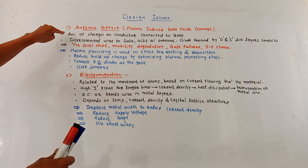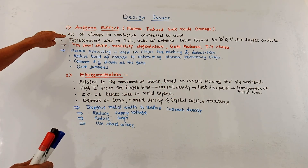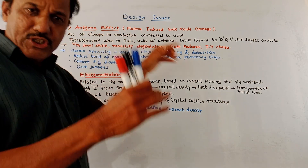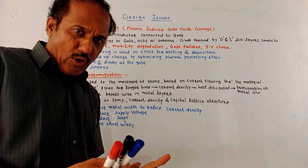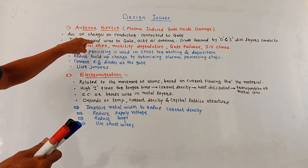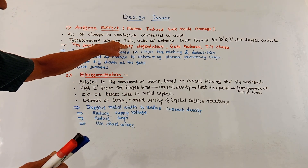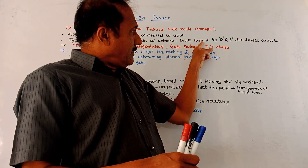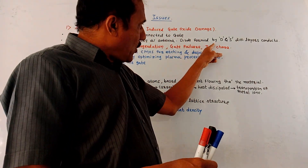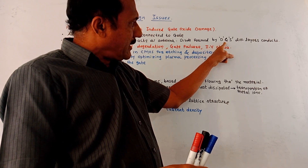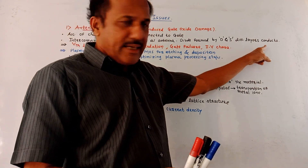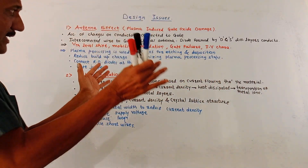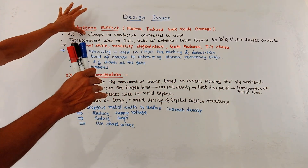Another name for this antenna effect is plasma induced gate oxide damage, because this effect is related to the plasma which is getting induced. There is accumulation of charges on the conductor connected to the gate terminal of the MOSFET, so the interconnected wire to the gate terminal acts as an antenna. There is also a diode formed between drain and source diffusion layers, and this diode starts conducting — this is called the antenna effect.